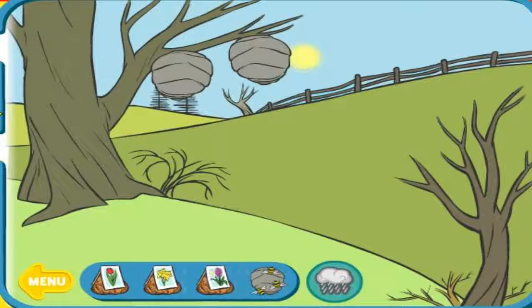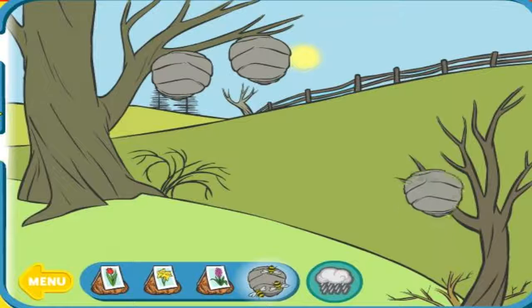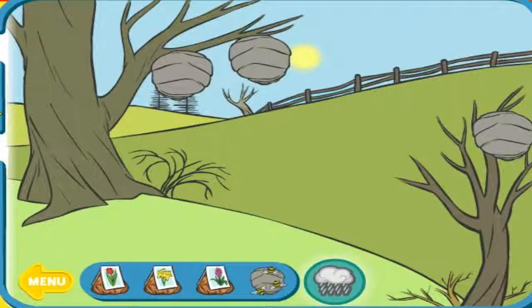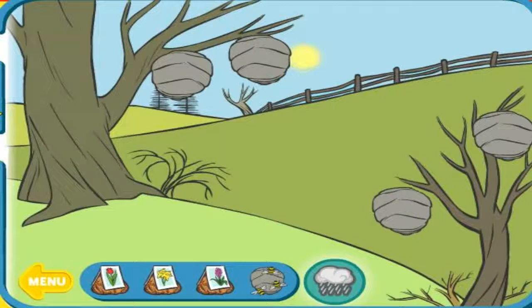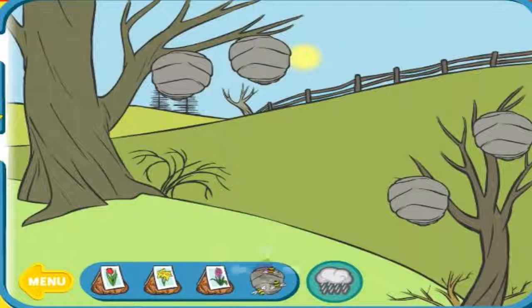Plant flower bulbs or put some beehives into the scene. When you're done, click the rain button to bring spring. Flower bulbs grow when they're planted in the ground.